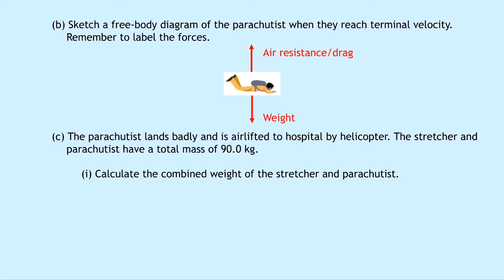Part C says the parachutist lands badly and is airlifted to hospital by helicopter. The stretcher and parachutist have a total mass of 90.0 kilograms. Part one says to calculate the combined weight of the stretcher and parachutist. This is quite a straightforward W equals mge calculation. So we're going to write down what we know. We're trying to find the weight. We know that the mass is 90.0 kilograms and g on Earth is 9.8 newtons per kilogram.